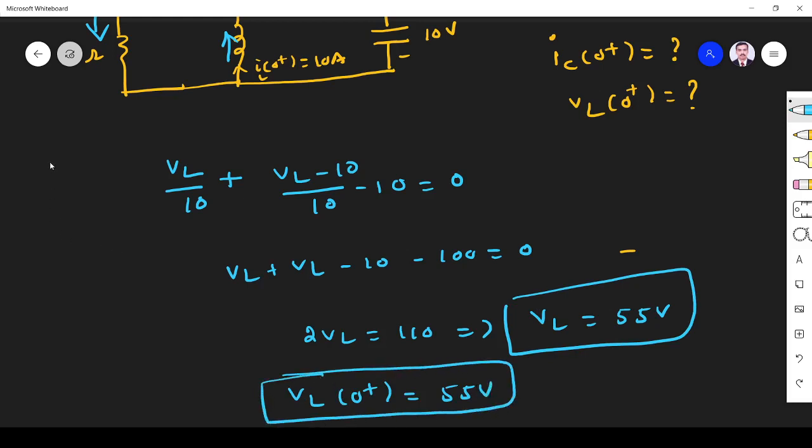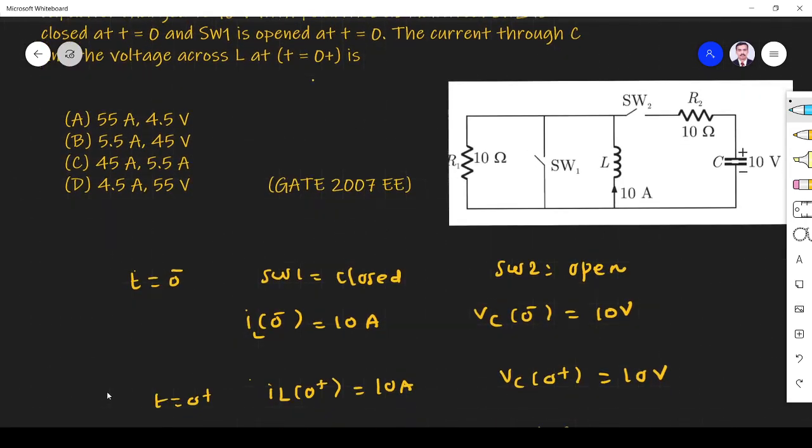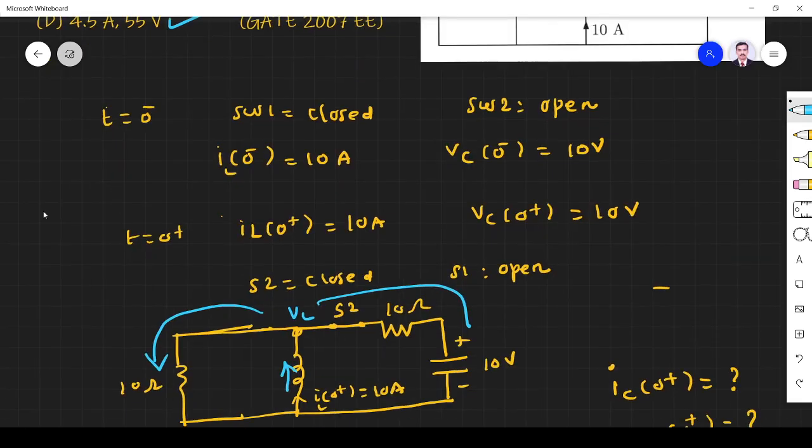So can we get the answer from this V_L equals 55 volt? V_L is 55 volt. Is there any other option with 55 volt? No other 55 volt. So the answer must be this one. We don't need to find it, but anyway, we will find it.